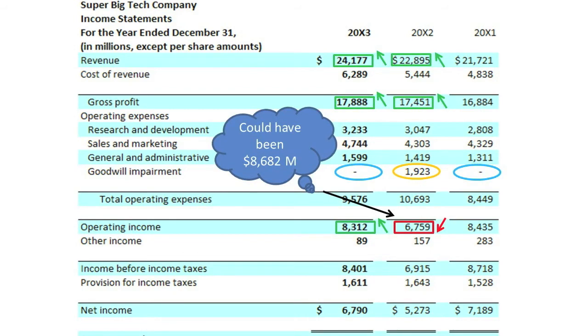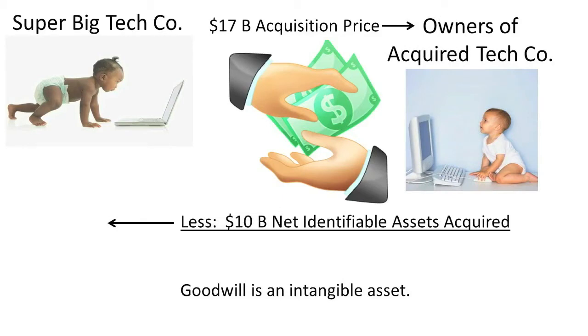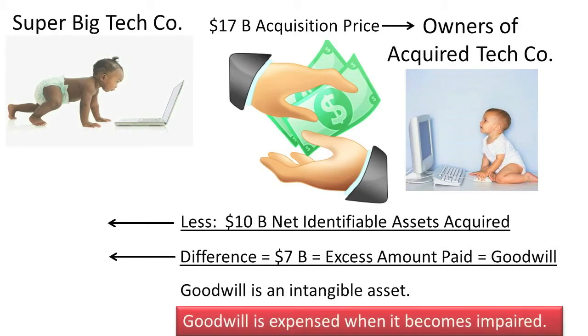You probably also noticed that SBTC recognized no goodwill impairments in 20X1 or in 20X3. Why did it only record a goodwill impairment in 20X2? What is goodwill and when does goodwill impairment need to be recorded? Although we don't have time to fully answer these questions now, you should already know that goodwill is an intangible asset. Goodwill represents the fact that SBTC paid, let's assume $17 billion, to purchase another company — let's call it Acquired Tech Company (ATC) — that had $10 billion in net identifiable assets, thus overpaying by $7 billion. This $7 billion overpayment resulted in an asset called goodwill. When SBTC later realized that its goodwill had declined in value, it had to record a goodwill impairment of $1,923,000,000. By using SBTC's comparative income statement, you were able to quickly home in on the goodwill impairment, which was one of the major causes of SBTC's declining operating income for 20X2.